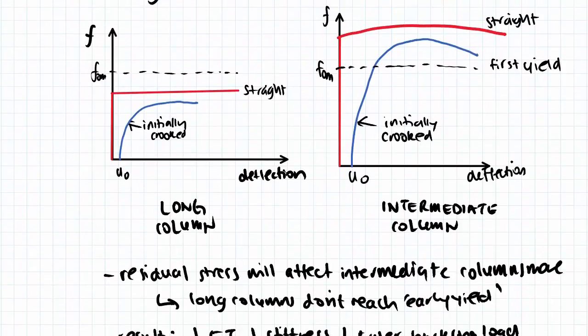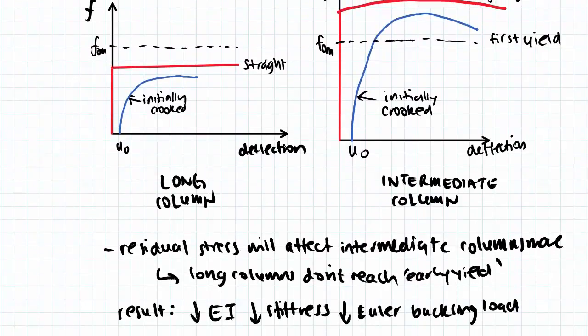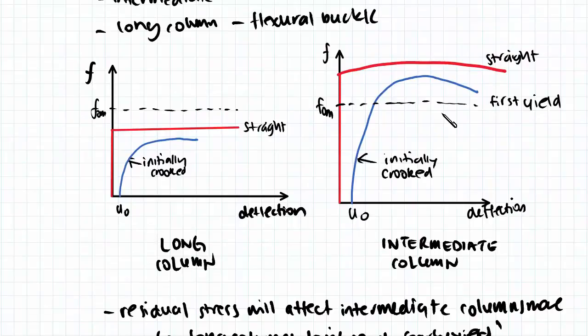And because of this, residual stress and imperfections in general will affect the intermediate column more. Because our intermediate column actually goes up into the area above first yield, where it actually starts yielding. Yielding is not actually a problem for our long columns.